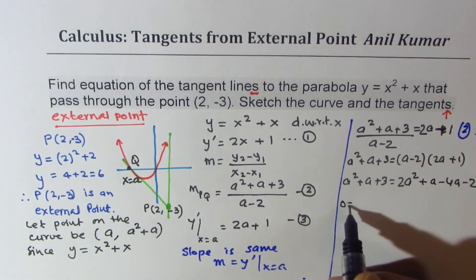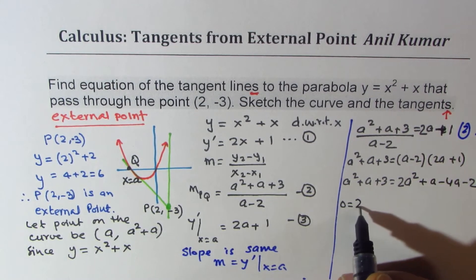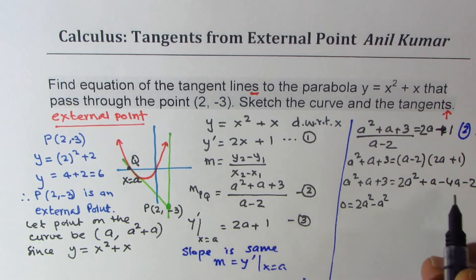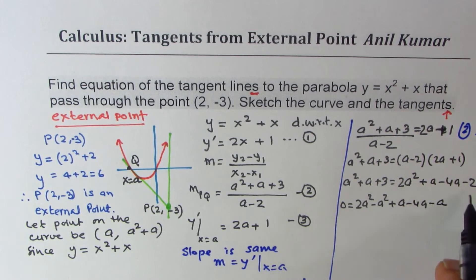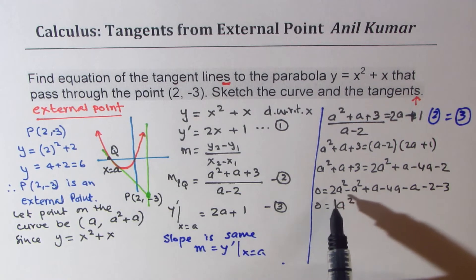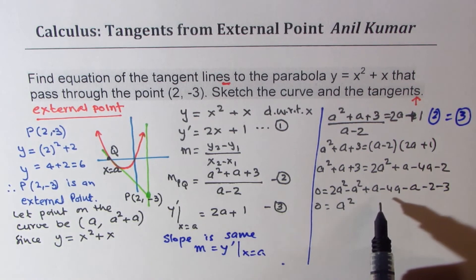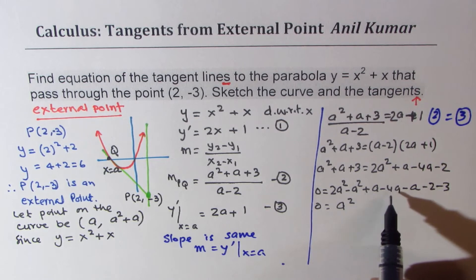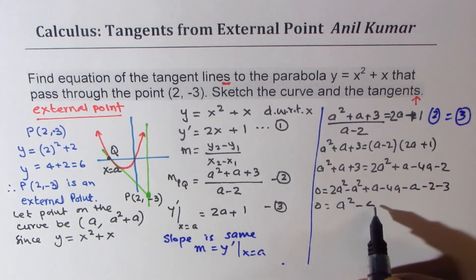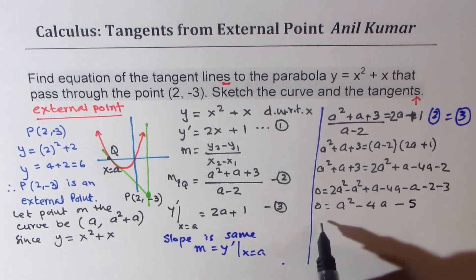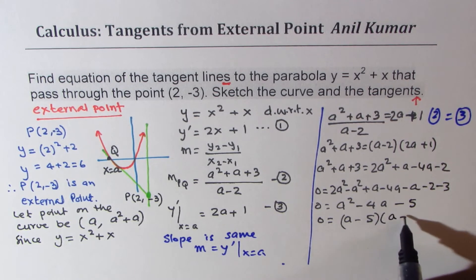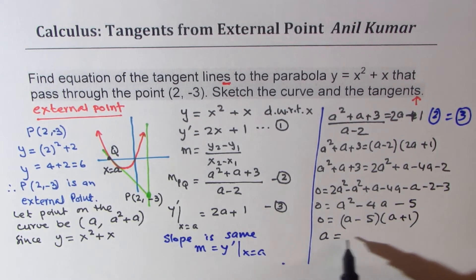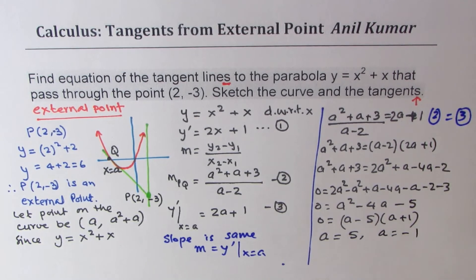Bringing all terms together, we get 0 equals a² − 4a − 5. This factors as (a − 5)(a + 1), giving two solutions: a equals 5 or a equals minus 1. So we have two points on the curve where the tangent lines touch.